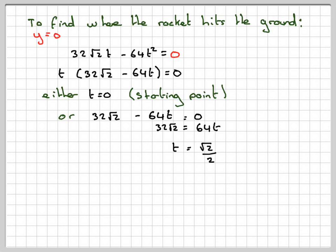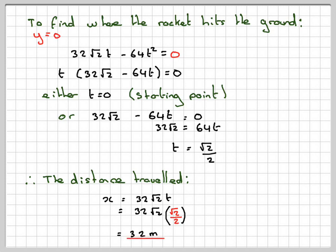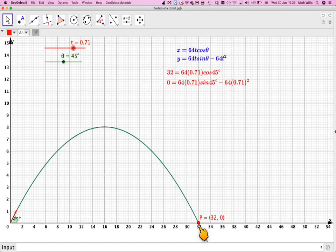So in order to actually find the horizontal distance, then I need to substitute it into x equals 32√2 t. And that will give me 32√2 times √2 over 2, because that's the value of t. And all the √2's will cancel out. So √2 times √2 will give me 2. 2 over 2 is 1. So the answer will be 32 meters, like I've shown you here in the diagram.